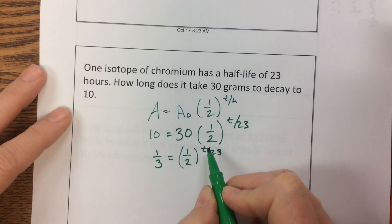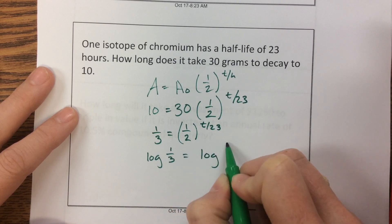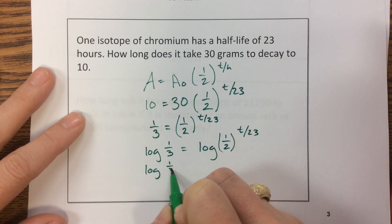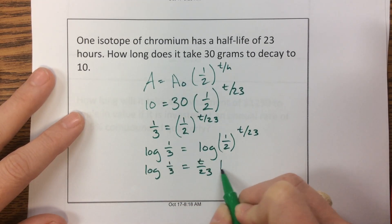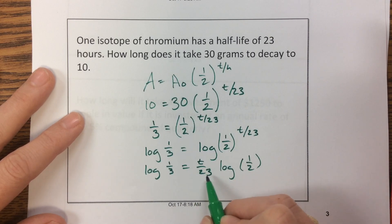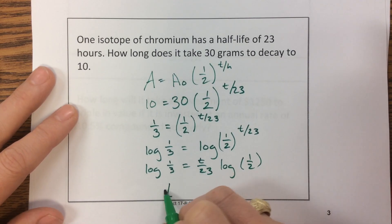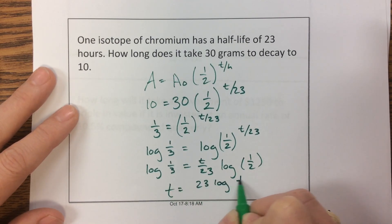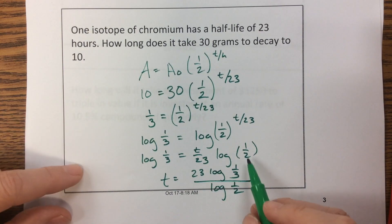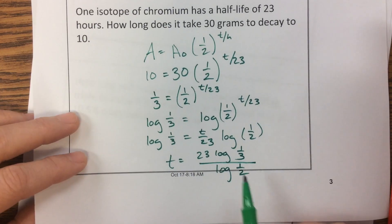At this point I have a variable in my exponent, so I'm going to take the log of both sides, then bring the exponent out front. T is being multiplied by log of one-half and divided by 23, so I undo that — divide by log of one-half and multiply by 23. That gives T equals 23 times log of one-third divided by log of one-half. Go check the answer key online because I did finish it there.